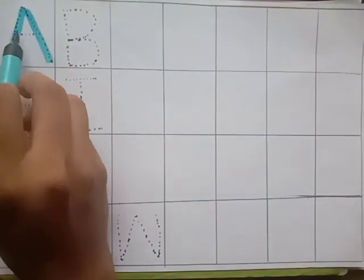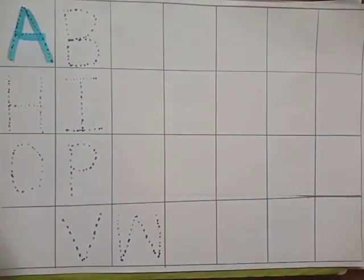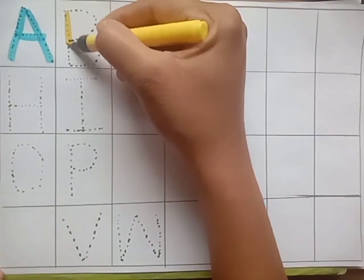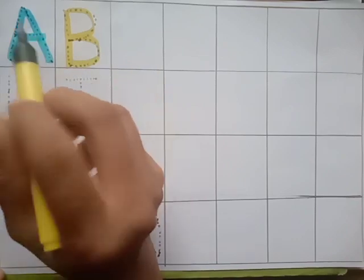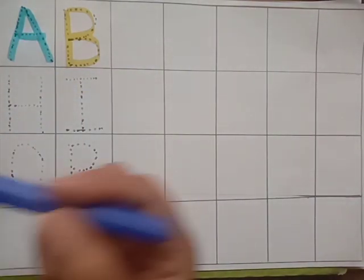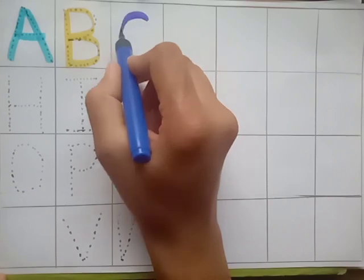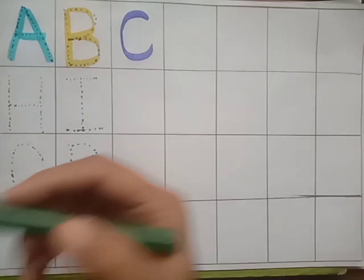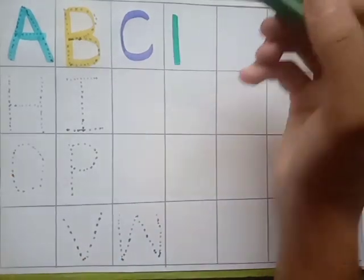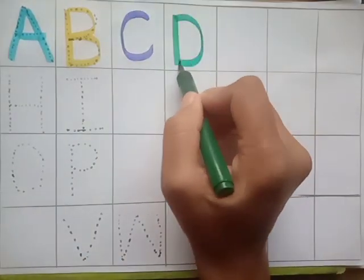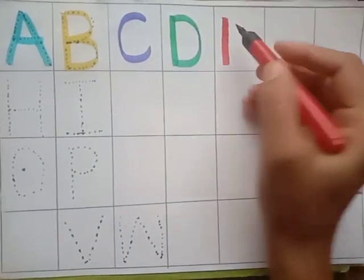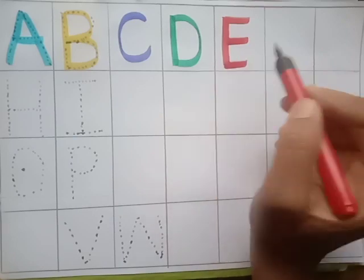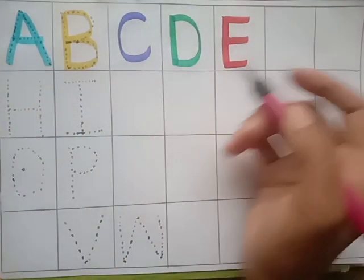A for apple, A for apple. B, B for bat, B for bat. C, C for cat, C for cat. D, D for doll. E, E for elephant, E for elephant.